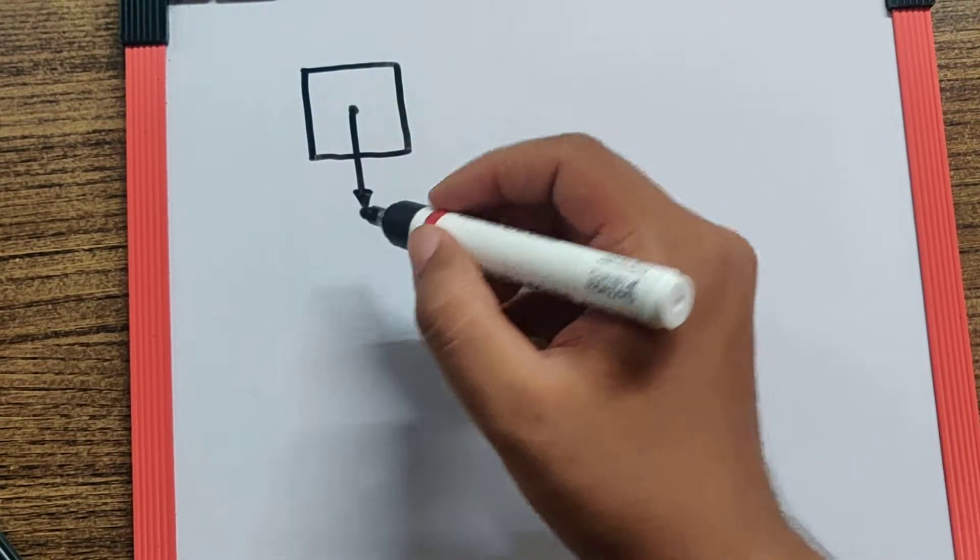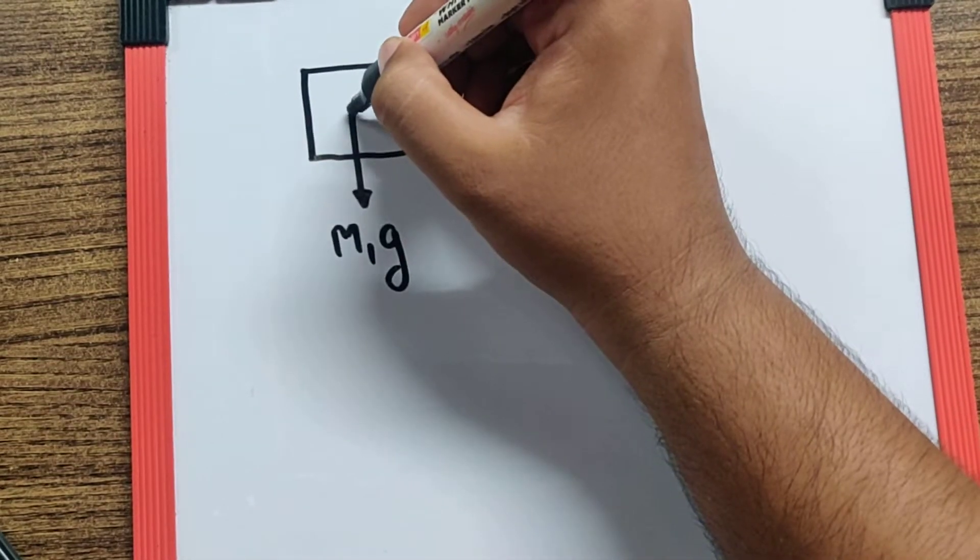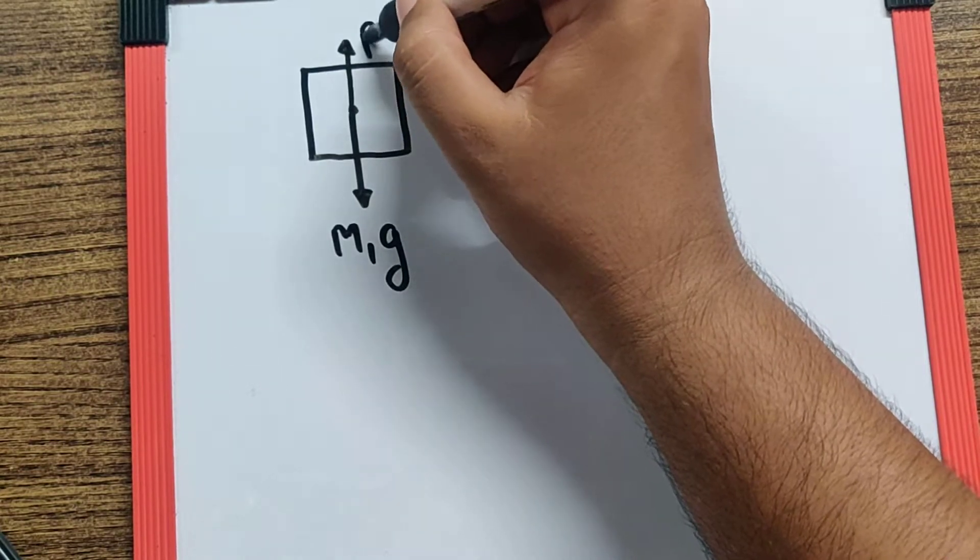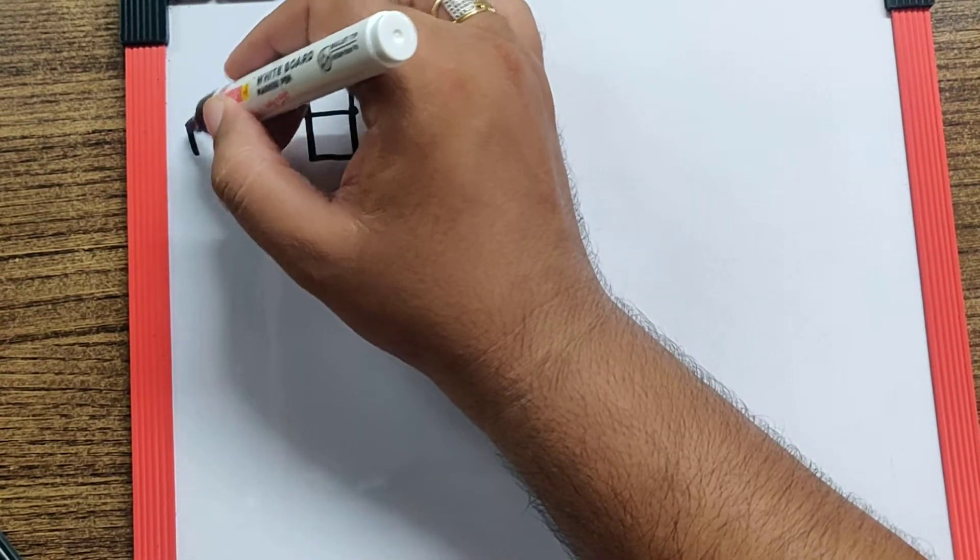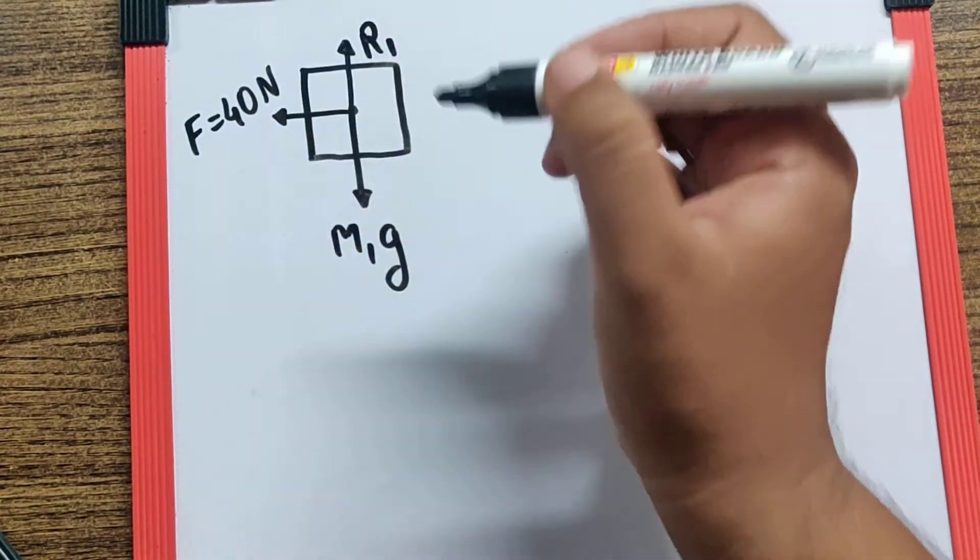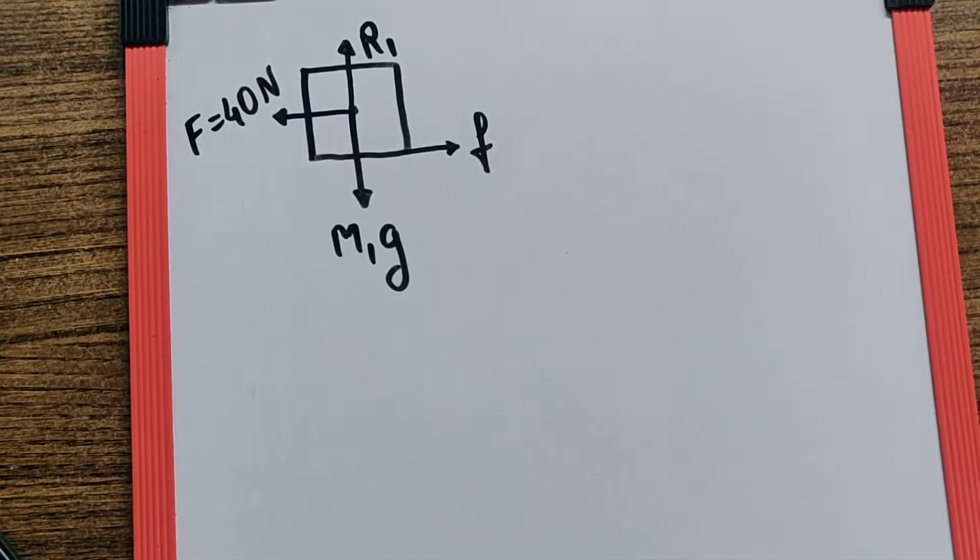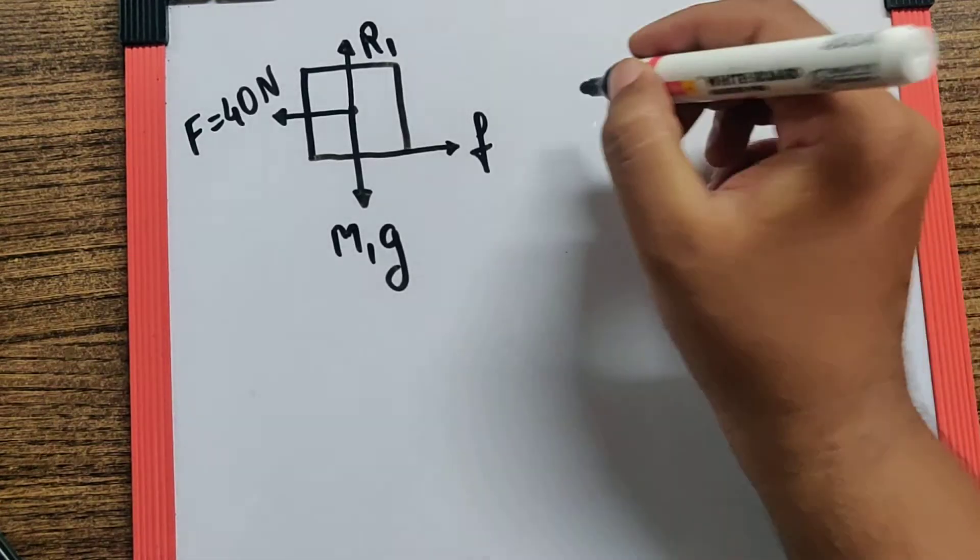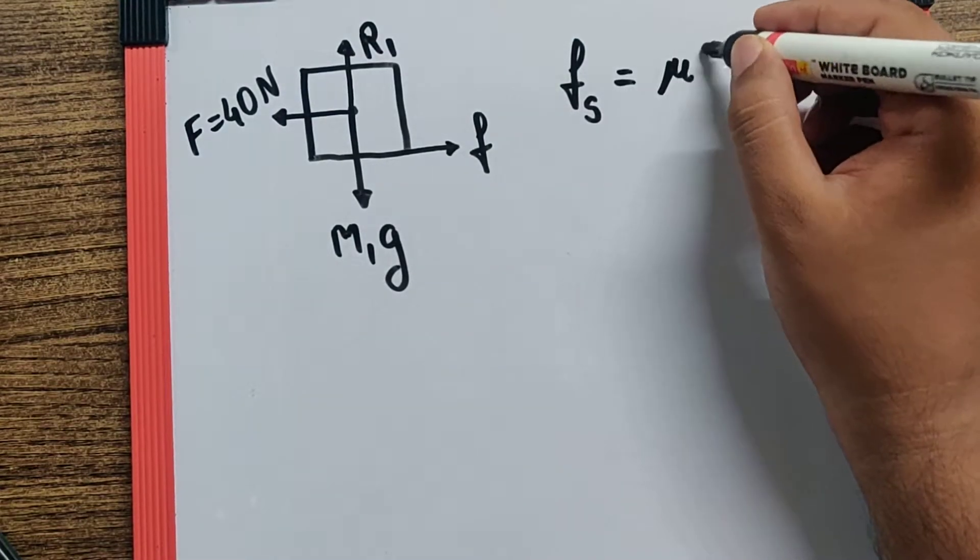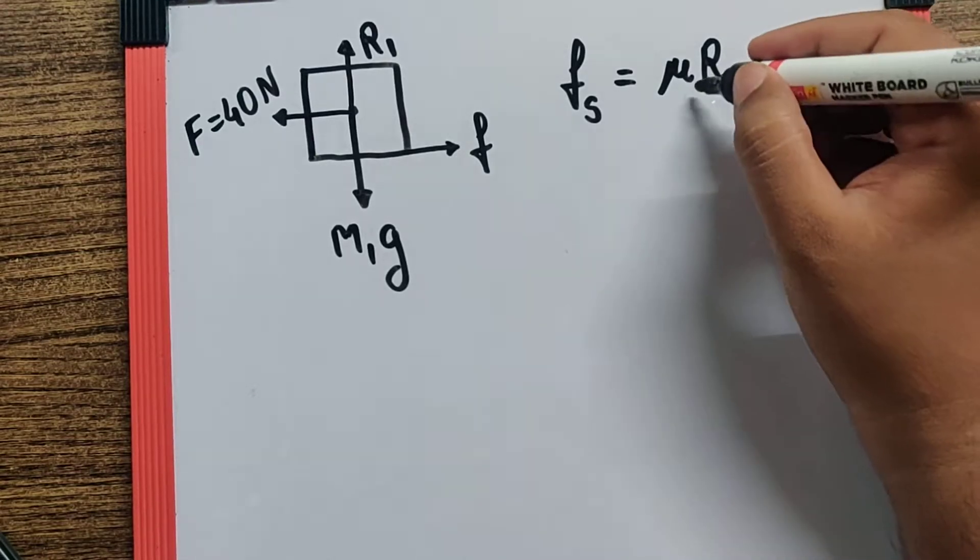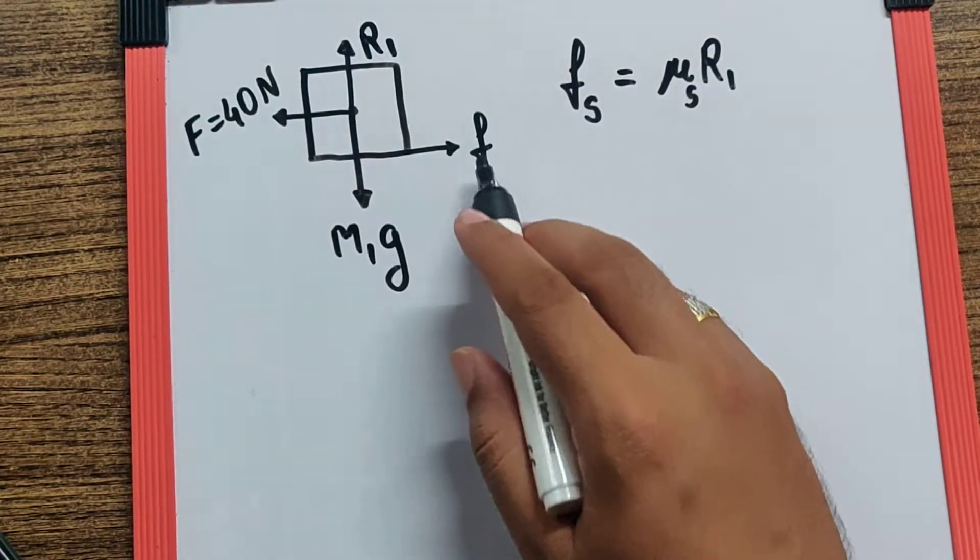So I can say it is M1g, which is balanced by the reaction R1. The force, which is 40 newtons, is given towards left, which is opposed or may be balanced by the friction force. Now if you calculate the maximum static friction, it's going to be μR1, where μ is the coefficient of static friction.